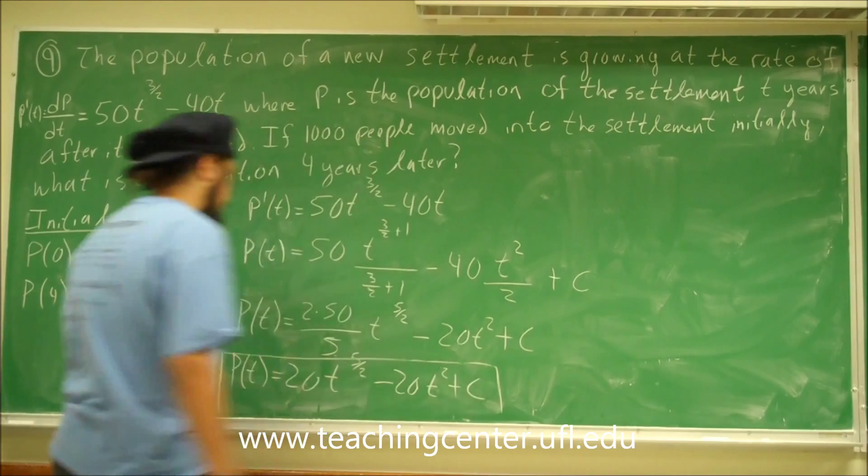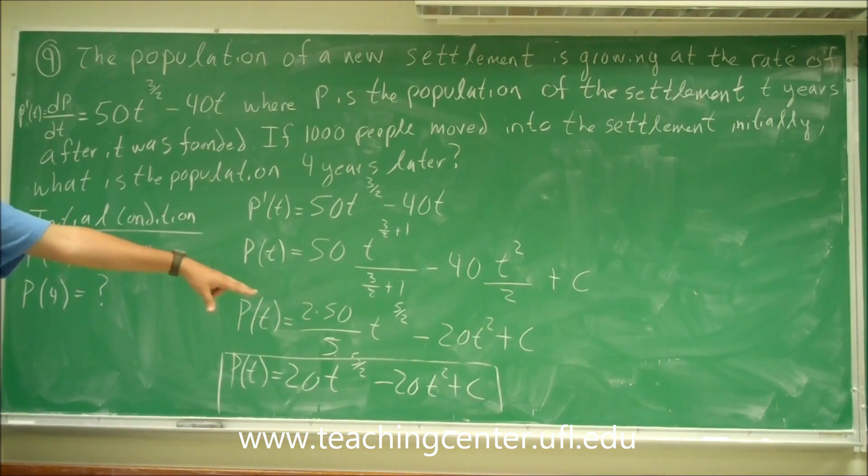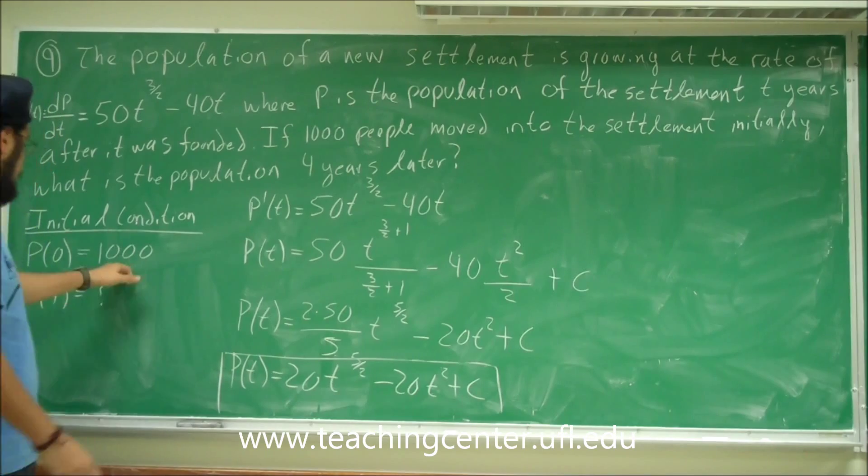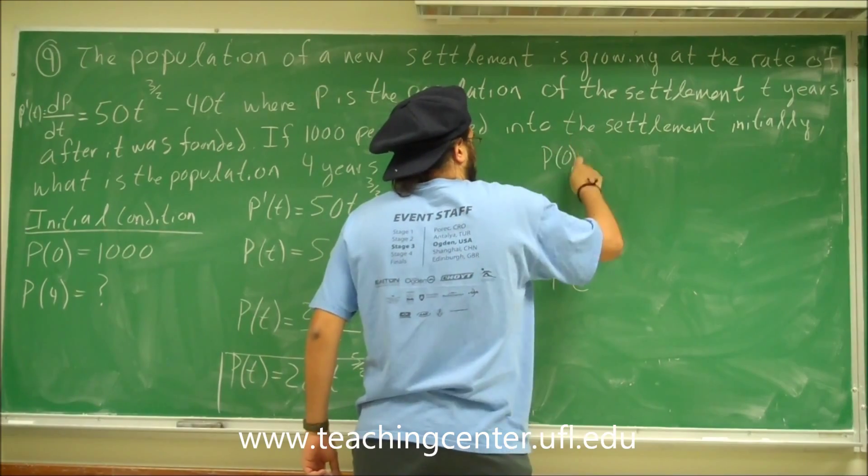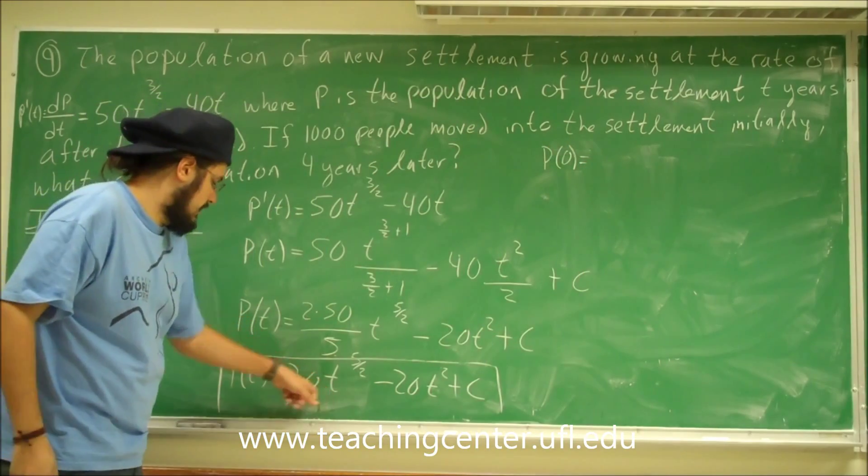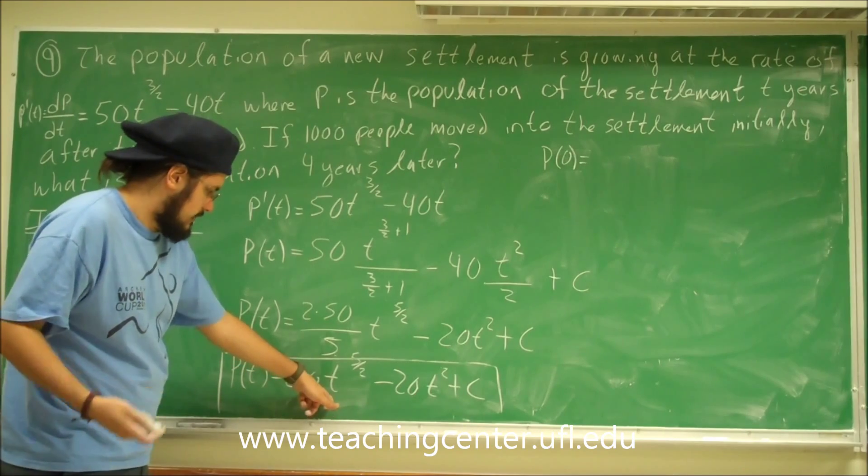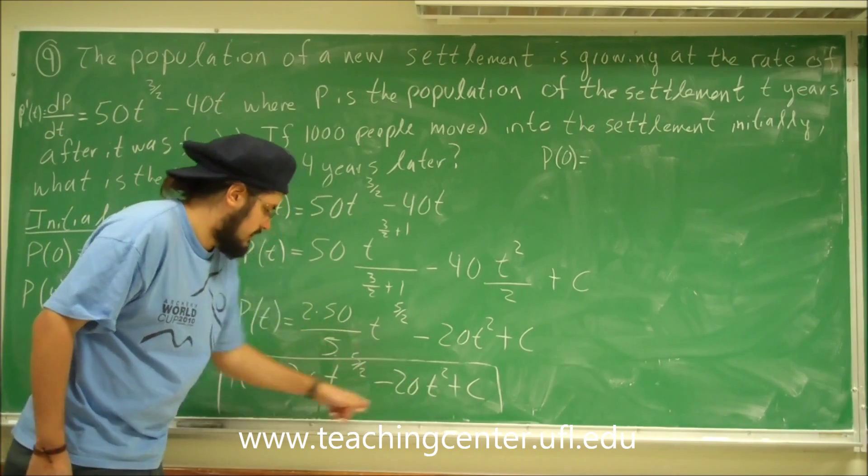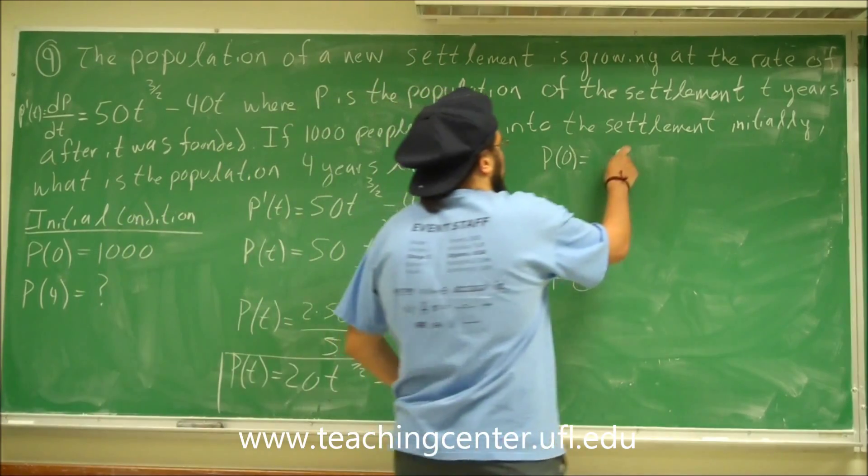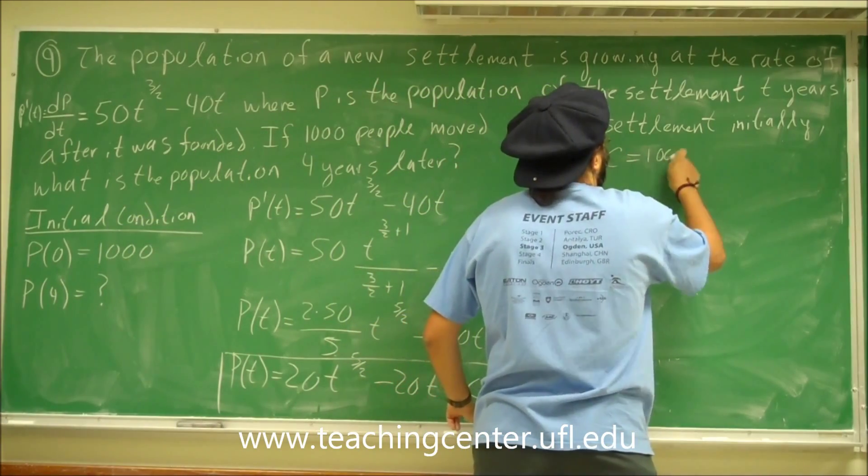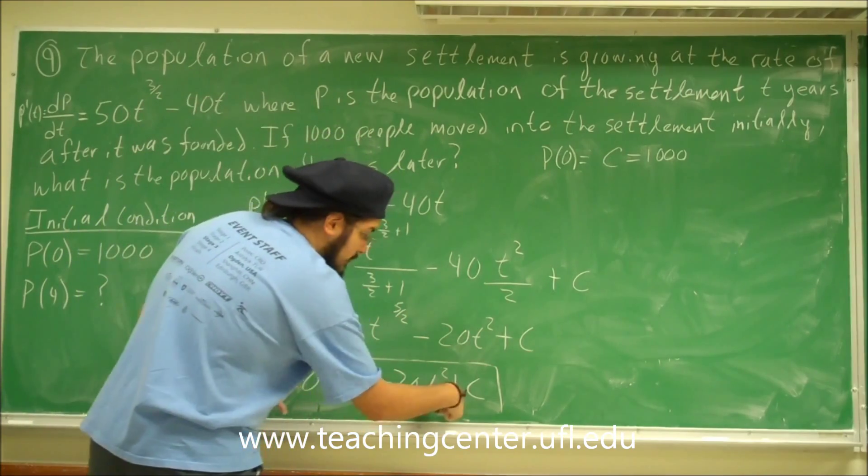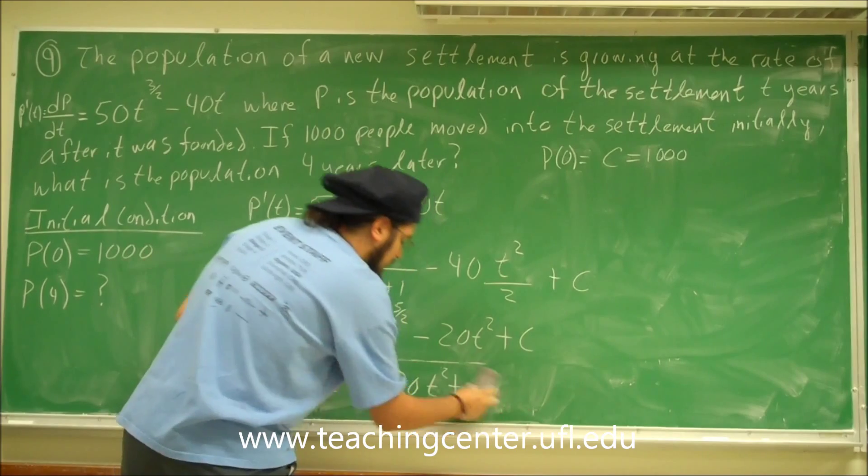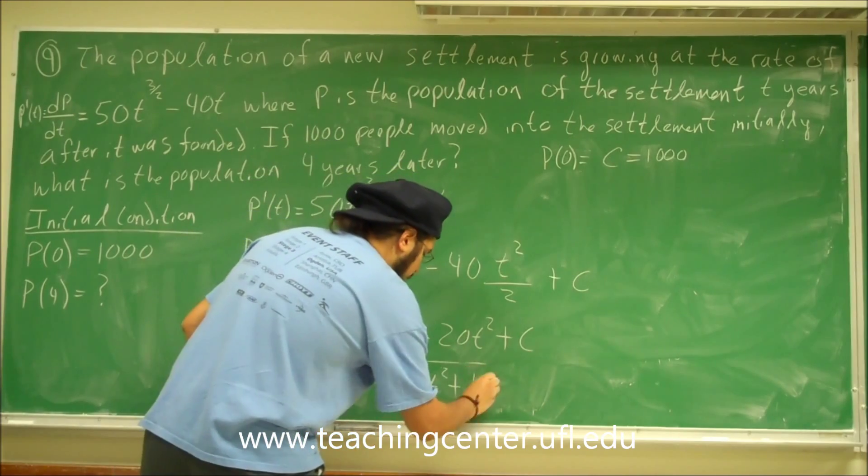So we have this function p(t), but we have a c there. We need to find what c is. However, we have the initial condition. We can go ahead and find out what c is. So we know p of 0. We know p of 0 then is going to be, plug in 0 here. 20 times 0, that's 0. 20 times 0, that's 0. So 0 minus 0 is 0. And then we're just left with c. And then c is 1,000. So now that we have that, I'm going to go ahead and save some space. I'm going to erase the c now. And I'm going to go ahead and plug in 1,000. So that's our c.